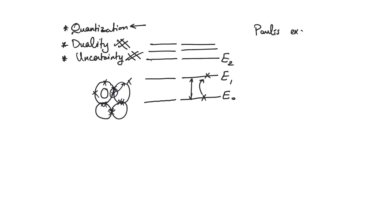When we bring two atoms of the same element together, we start to place the energy levels of their electrons next to each other. There is something called the Pauli exclusion principle, which states that two electrons cannot have the same quantum state — which for our purposes means the same energy — if they are close to each other. What happens is we observe energy level splitting: the two energy levels get separated from each other slightly.